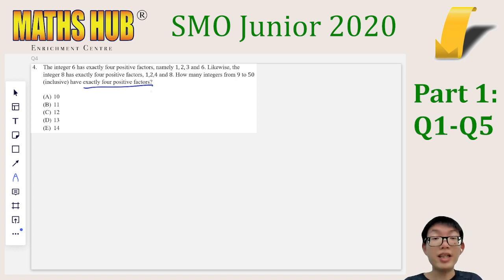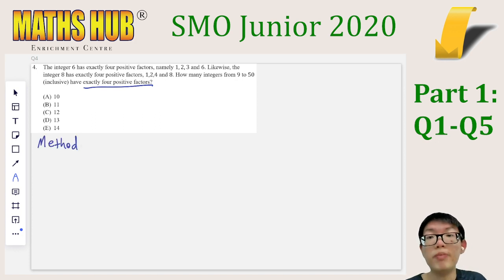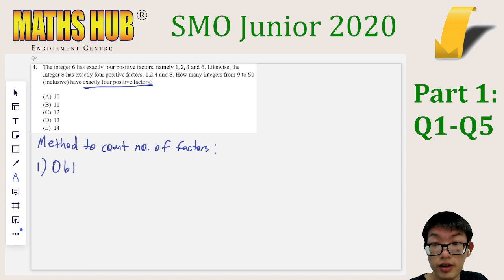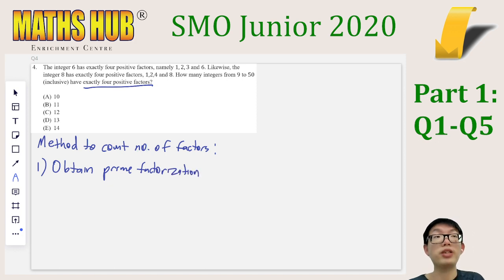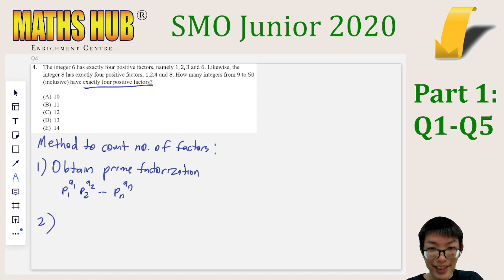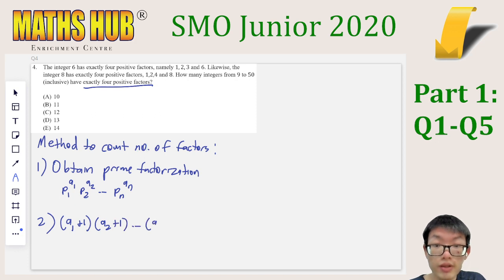For counting the number of factors, there is a very simple method. First, obtain the prime factorization in the form p1^a1 × p2^a2 × ... × pn^an. The number of factors is then (a1 + 1)(a2 + 1)...(an + 1) — you take each exponent, add 1, and multiply them all together.